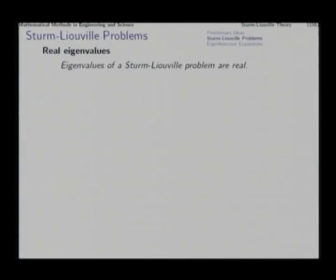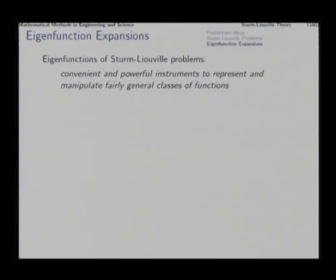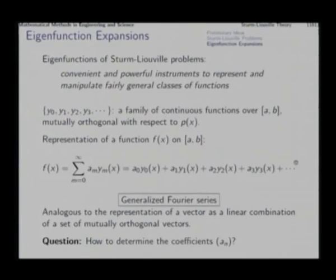We come to the most important application of eigenfunctions of Sturm-Liouville problems: function representations. Eigenfunctions of an SL problem give us a convenient and powerful tool to represent fairly general classes of functions. If we select a family y₀, y₁, y₂, y₃, etcetera of mutually orthogonal continuous functions over an interval, then a representation of a function over this interval could be made as a linear combination — an infinite series — called a generalized Fourier series.